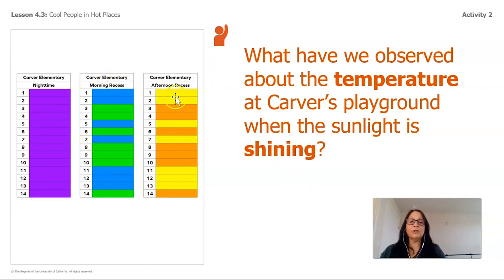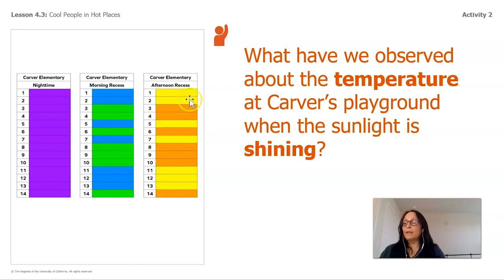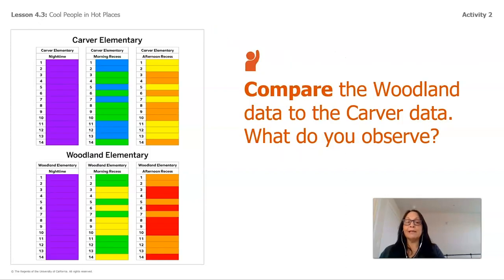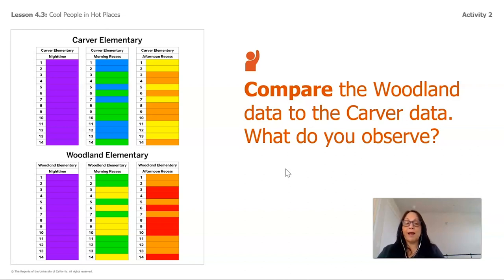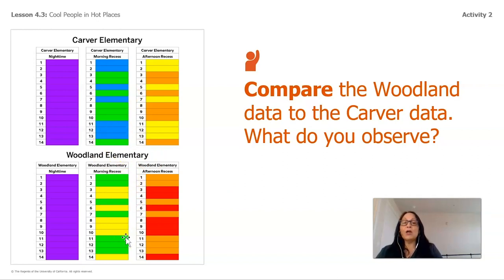We learned all about colors and that's how we're able to determine cold, cool, warm, and hot. Now compare the Woodland data to the Carver data. What do you observe? Looking at it, we can see that Woodland's playground is warmer than Carver's playground at both morning and afternoon recess.